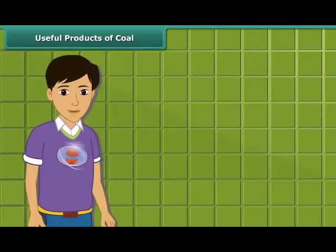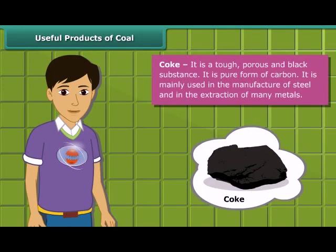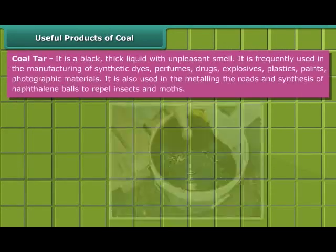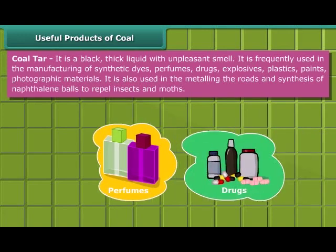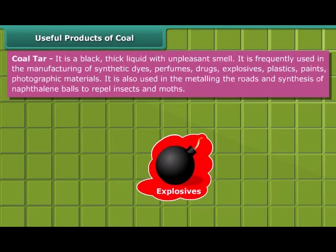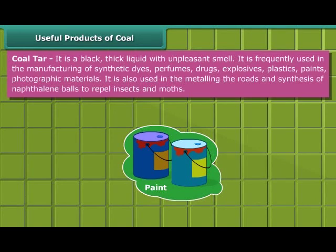First, let us know about coke. Coke is a tough, porous and black colored substance mainly used in the manufacturing of steel and extraction of many metals. Coal tar is a black, thick liquid with an unpleasant smell. It is frequently used for manufacturing synthetic dyes, perfumes, drugs, explosives, paints, plastics and photographic materials.